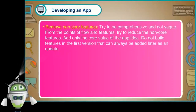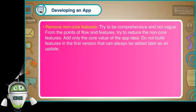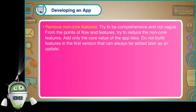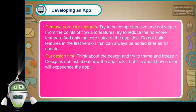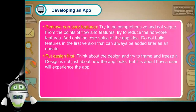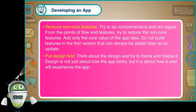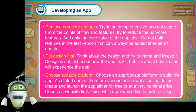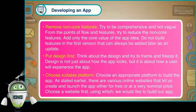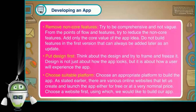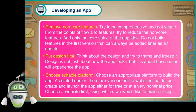Third, remove known core features — try to be comprehensive and not vague. From the points of flow and features, try to reduce the known core features. Add only the core value of the app idea. Do not build features in the first version that can always be added later as an update. Fourth, put design first — think about the design and try to frame and phrase it. Design is not just about how the app looks, but about how a user will experience the app. Fifth, choose a suitable platform — choose an appropriate platform to build the app. There are various online websites that let us create and launch the app either for free or at a very nominal price. Choose a website using which you would like to build your app.